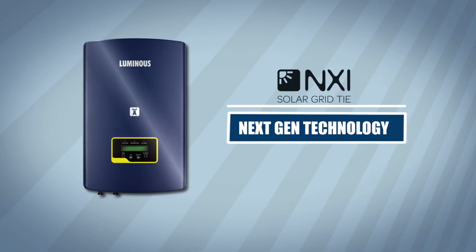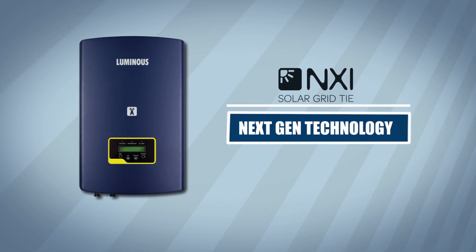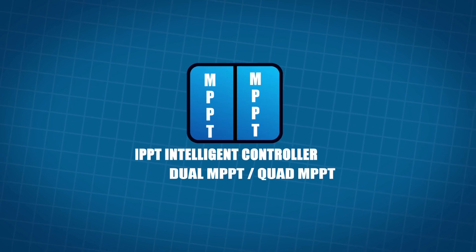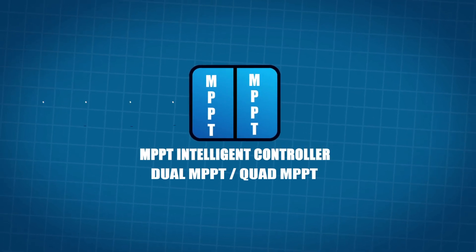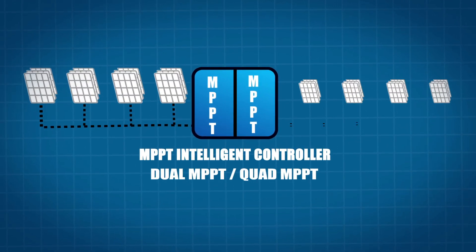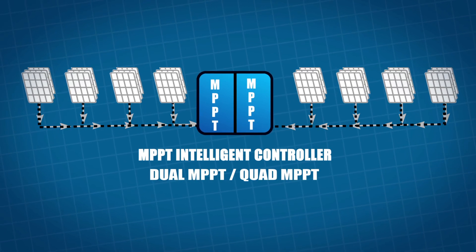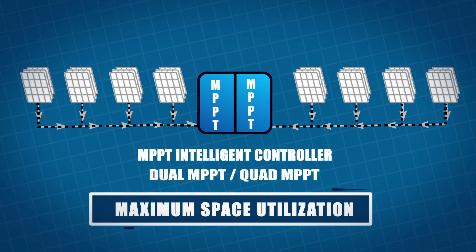Luminous NXI Grid Tie Inverter Range is next-gen technology product. It comes with dual and quad MPPT charge controller allowing you to install multiple solar panel strings in parallel for maximum space utilization.